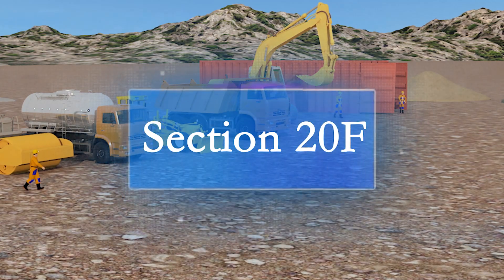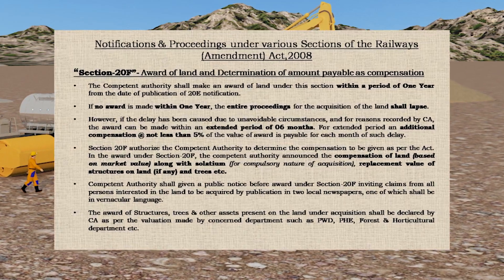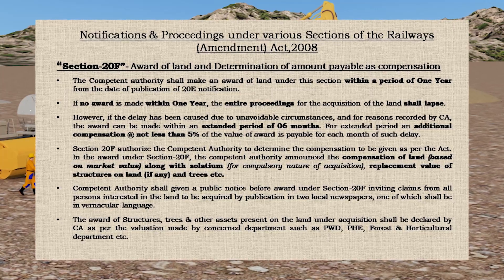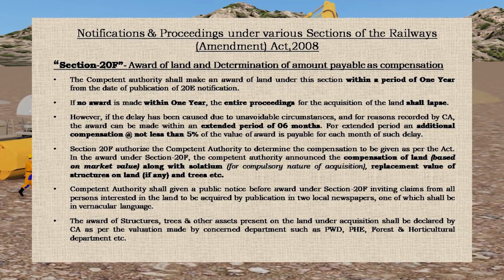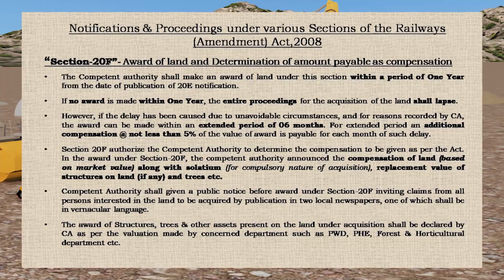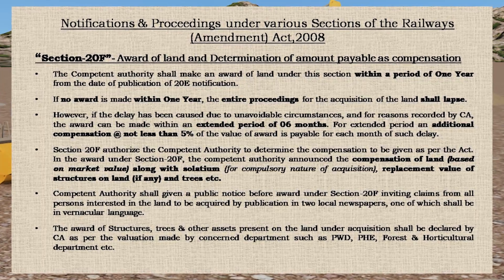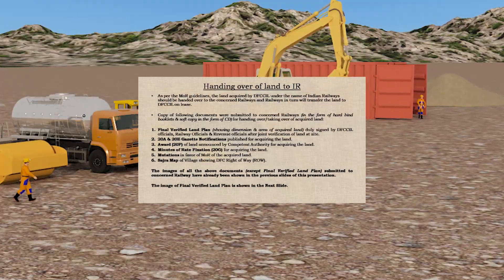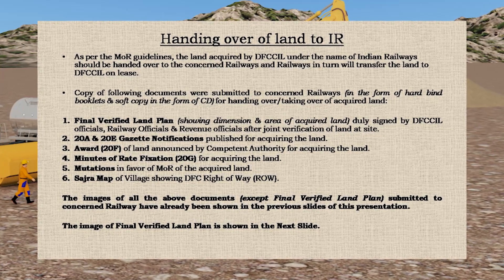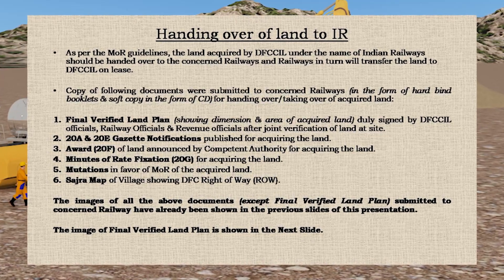Section 20F: The competent authority shall make an award of land under this section within a period of one year from the date of publication of the 20E notification. After disbursement of payment to project affected people, land is handed over to railways for construction.